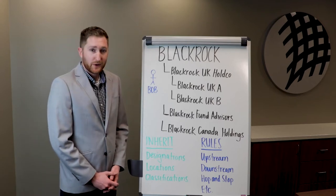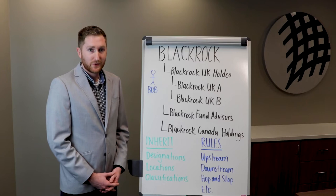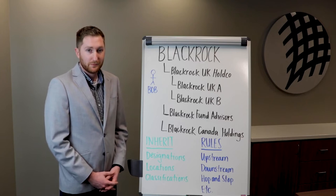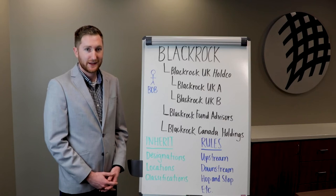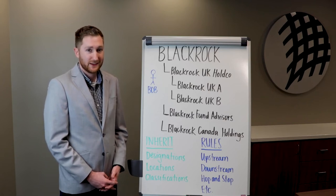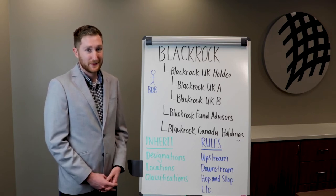Up on the board, we have a sample of the hierarchy for BlackRock, Inc. BlackRock is a massive U.S. investment company with 168 subsidiaries listed on their annual report, as well as $7.6 trillion in assets under management. This can create a data management nightmare.